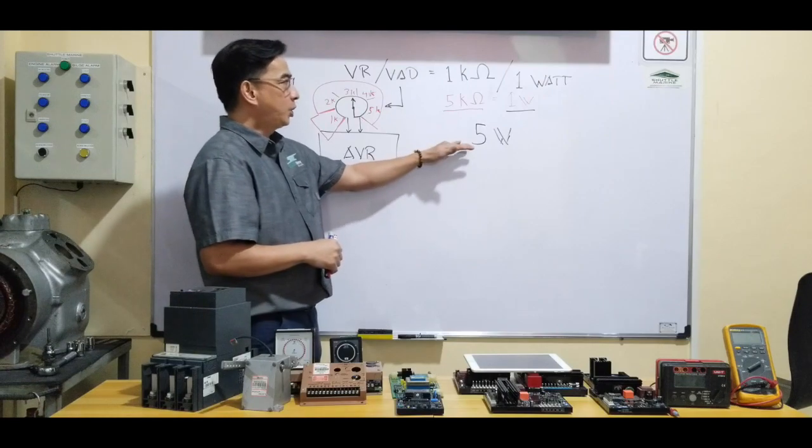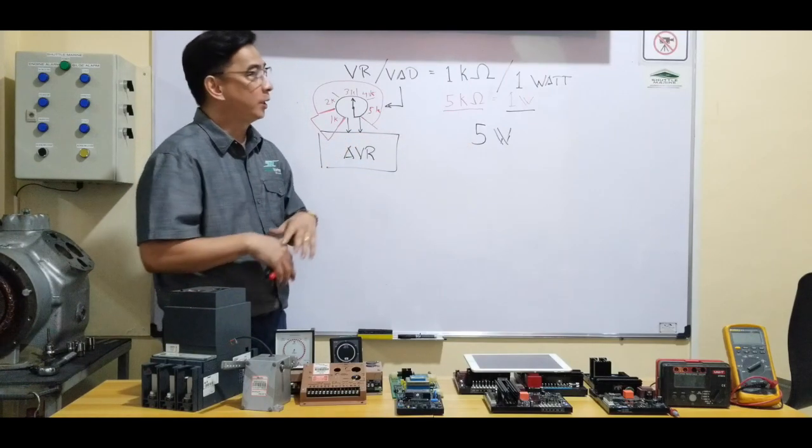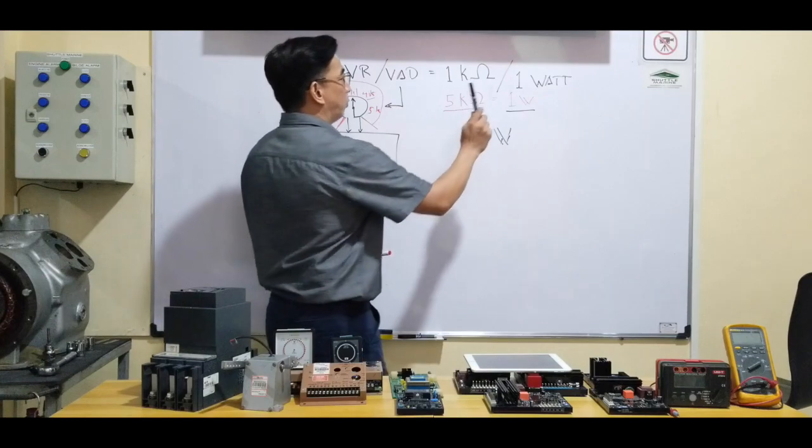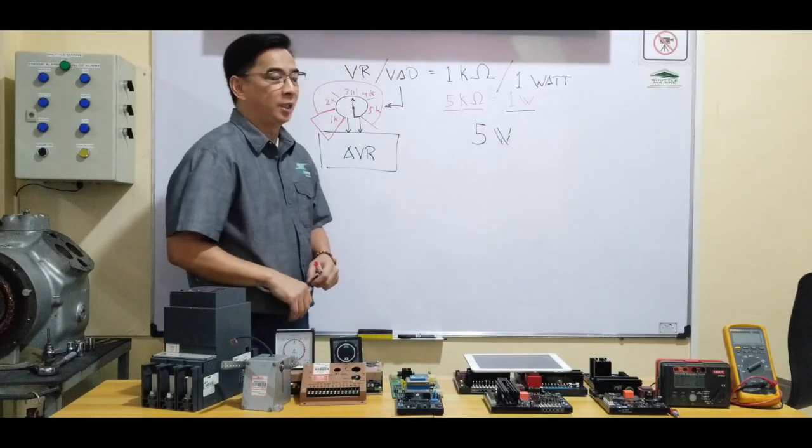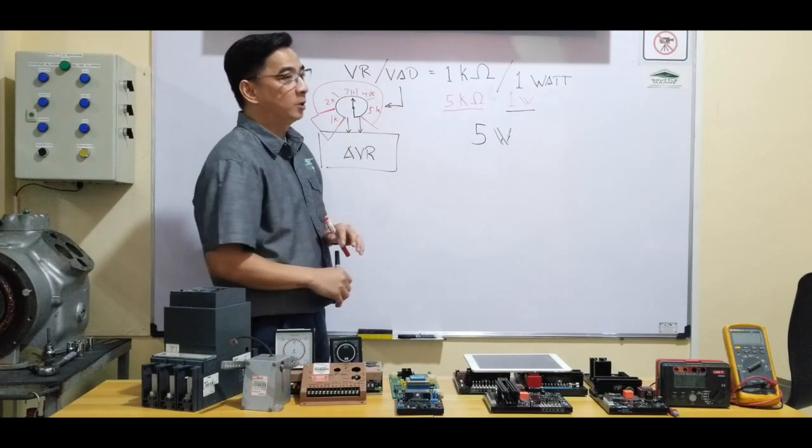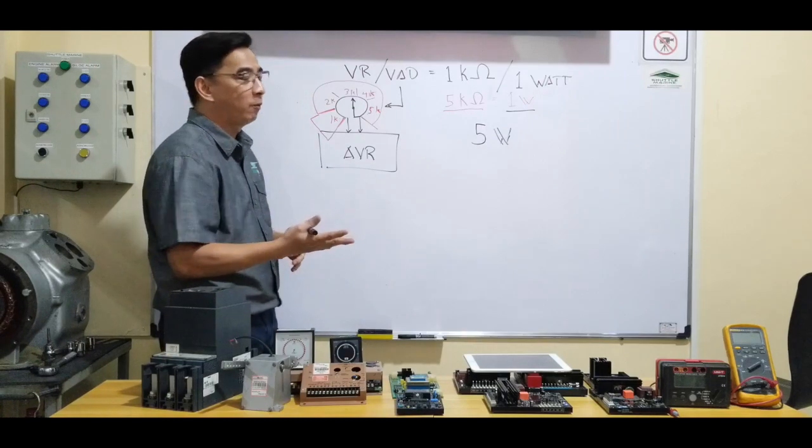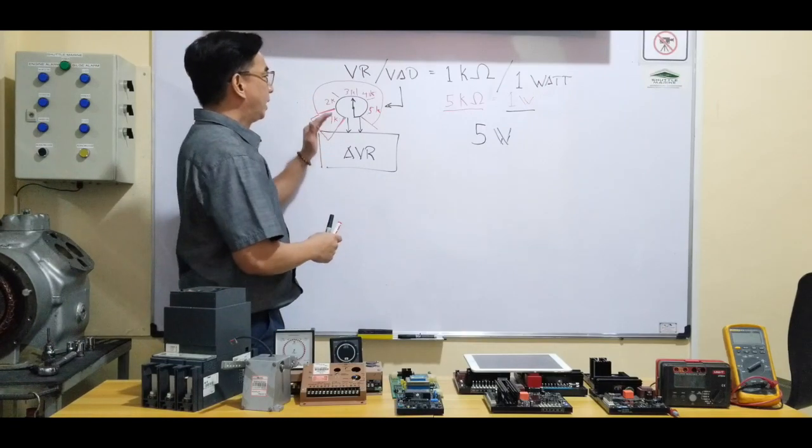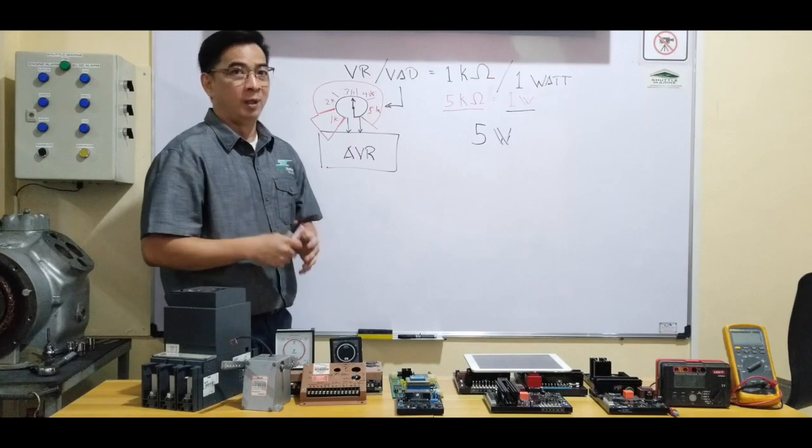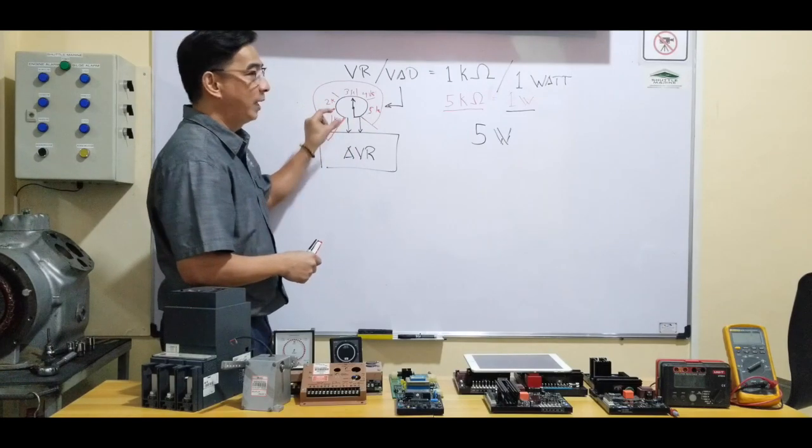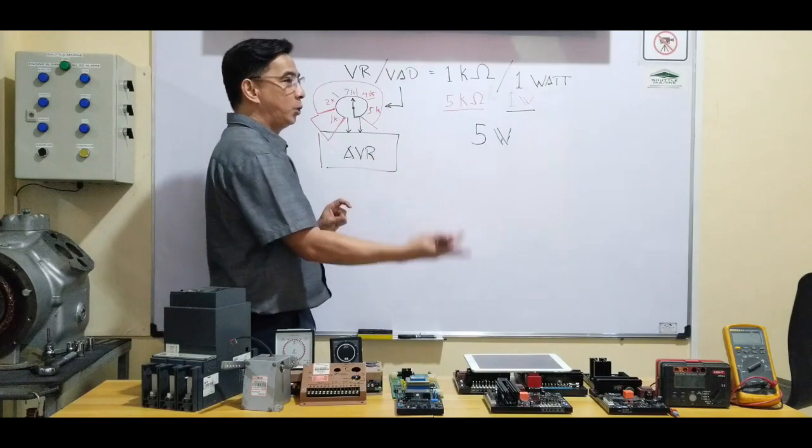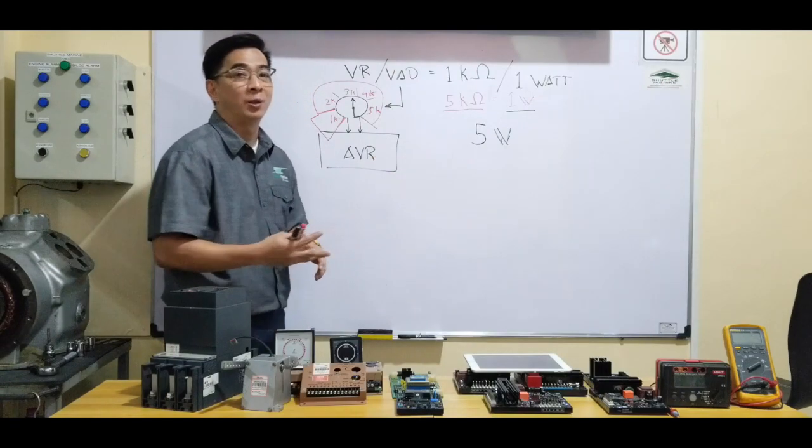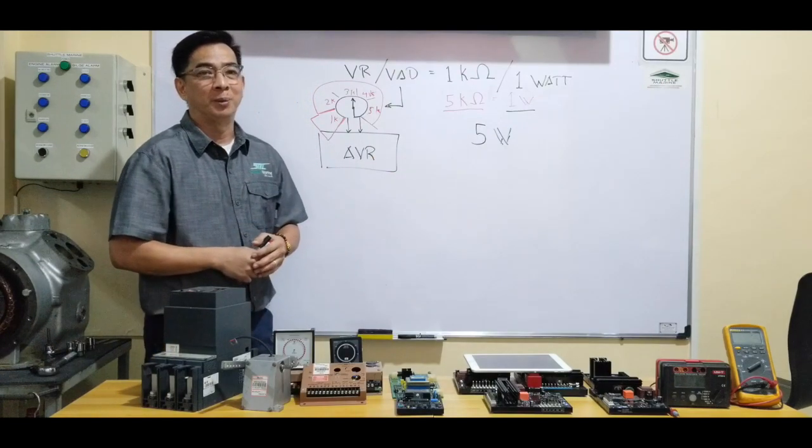Higher wattage creates higher current in the circuit. So it should be specific that we use the correct wattage. But on the resistance value, yes, we can use the higher value. But the thing is, it's quite difficult to adjust because it will have a very small variation and a huge effect on the voltage movement on our alternator output. Alright?